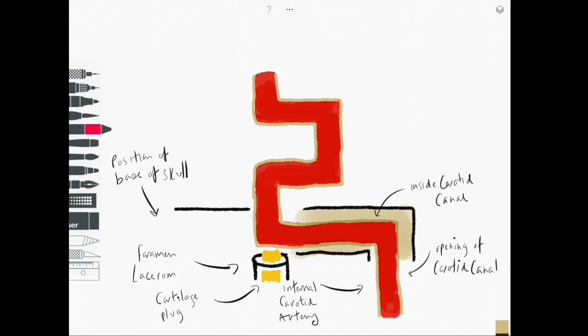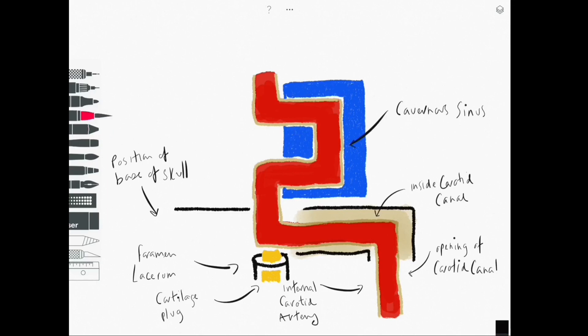The cavernous segment of the vessel is not bathed in blood but it is surrounded by dural venous sinus endothelium and other structures are within the cavernous sinus as well including cranial nerves.